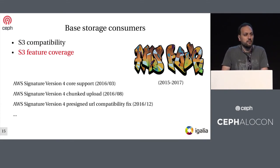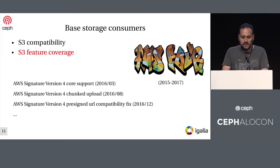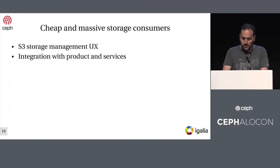Another example is feature coverage. Users and companies make decisions based on a compatibility matrix. But if you implement a long and complex feature, it evolves along several releases. In this case I used the example of AWS v4 — it landed in one release but evolved across several subsequent releases.